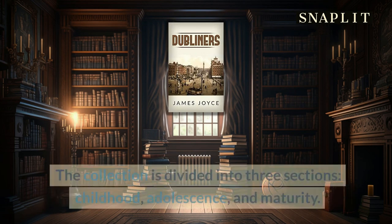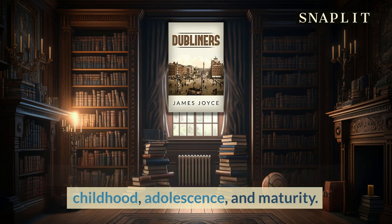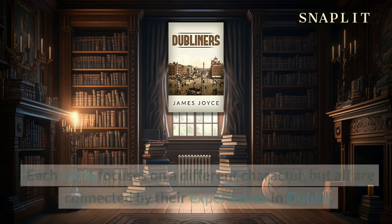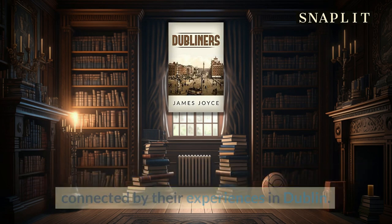The collection is divided into three sections: childhood, adolescence, and maturity. Each story focuses on a different character, but all are connected by their experiences in Dublin.